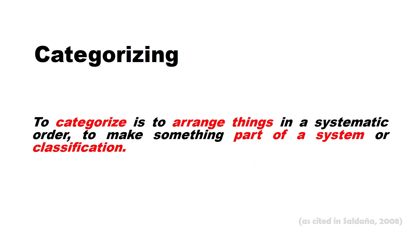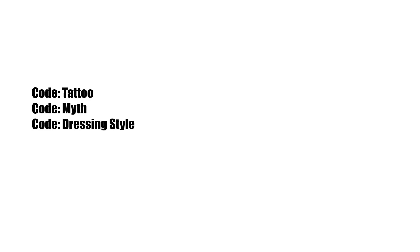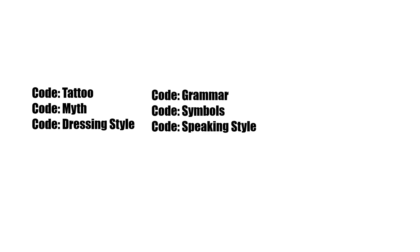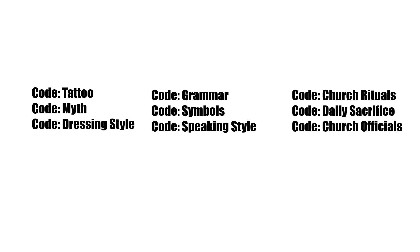Let us go to categorizing. Categorizing is actually simple once you know how to code — the categorizing would just come along. To categorize is to arrange things in a systematic order, to make something part of a system — you are going to classify things. For this particular topic, we are going to categorize the codes we made. For example, you have codes taken from your statements. I made only three, but for your work it could be more. Then you have another group of codes that belong to a different category.